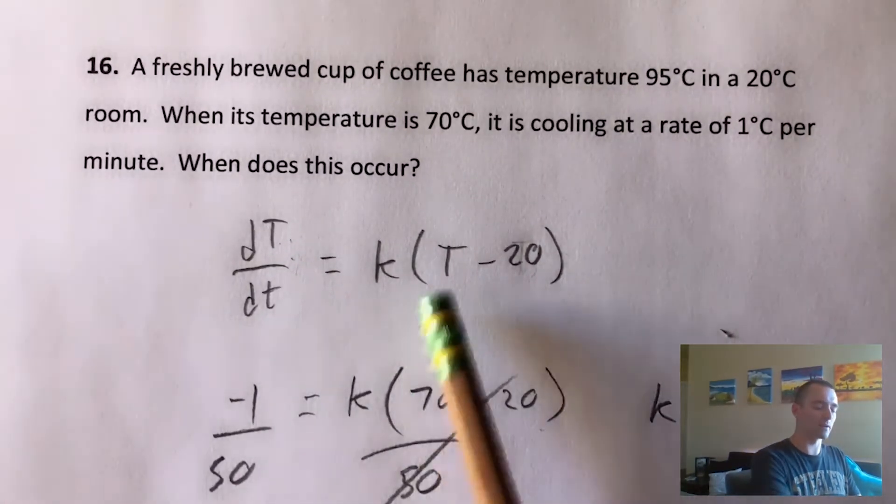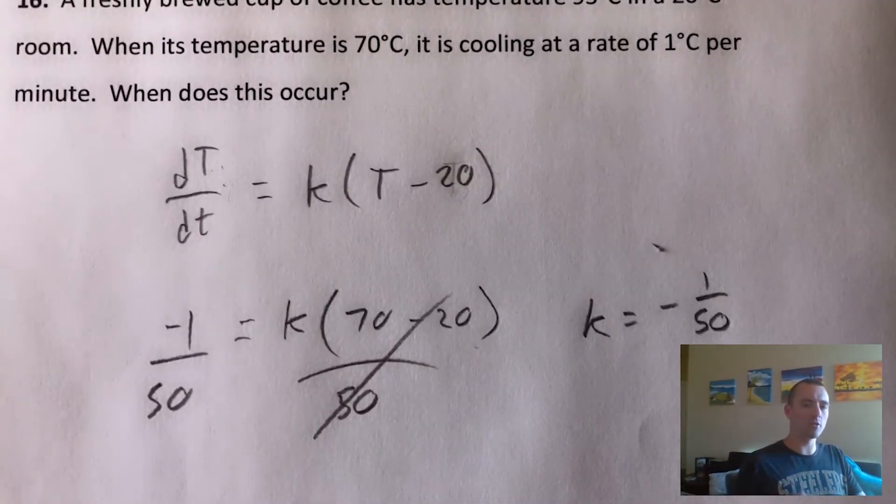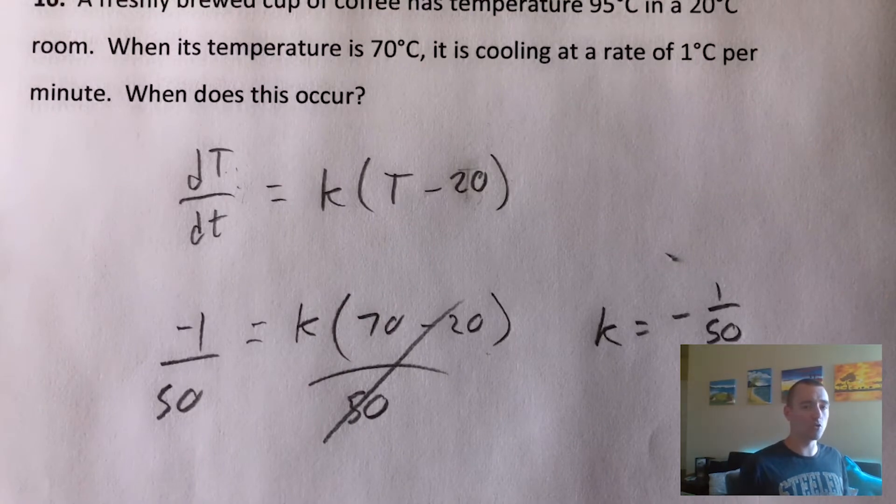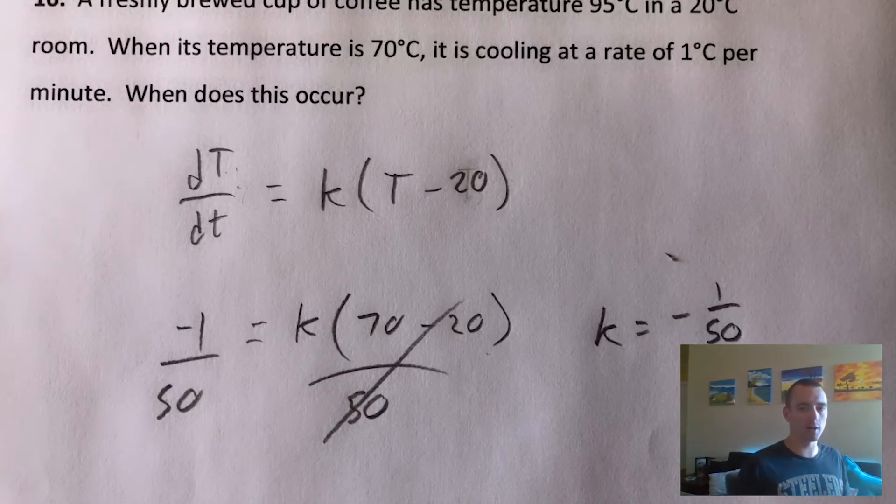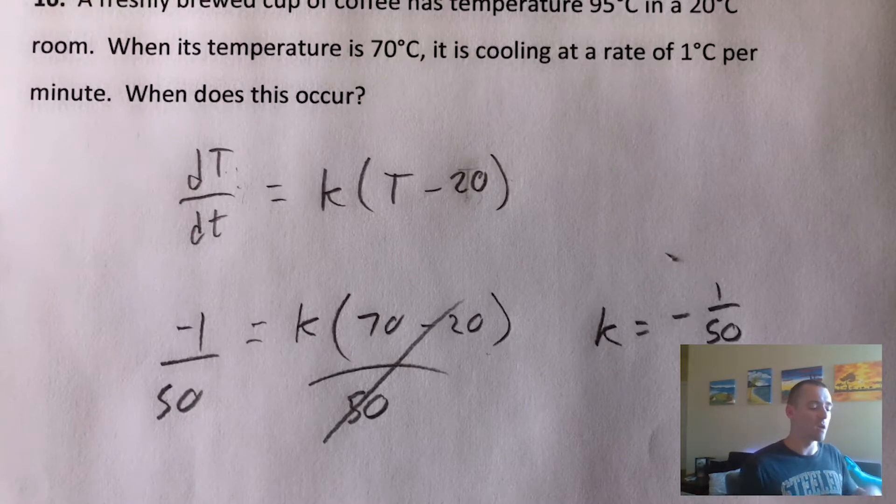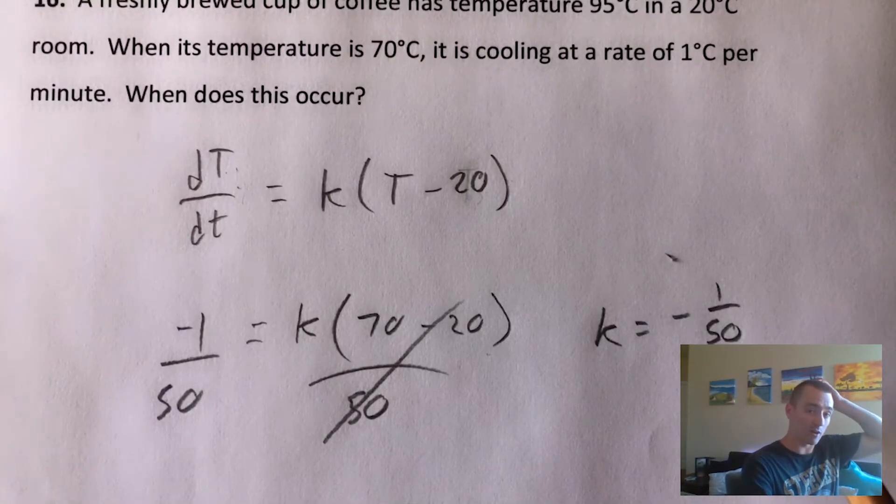So now what we can do is go back to this differential equation and follow the same process that we normally do with these types of problems. Because what we want to do is come up with an equation that tells us the temperature at some given time, so that we can figure out how much time has to pass for it to get to 70 degrees.